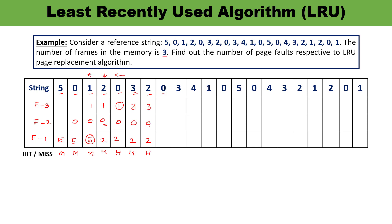Next is 0 — 0 is already available, so this is the condition of hit. Then 3 — 3 is again available, so this is also a hit. The frames remain 2, 0, 3. Next digit is 4. 4 is not available — condition of miss. Looking back before 4: 3 was used, before 3 was 0. So 2 is the least recently used and will be replaced. 4 goes in that position, giving frames 4, 0, 3.